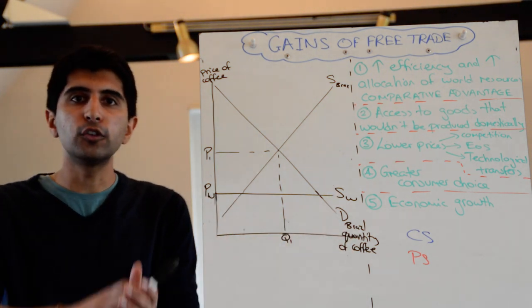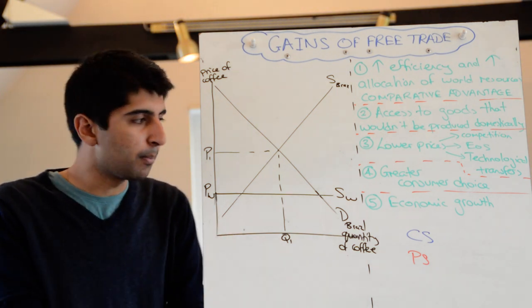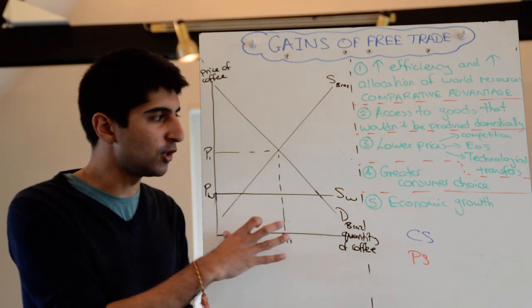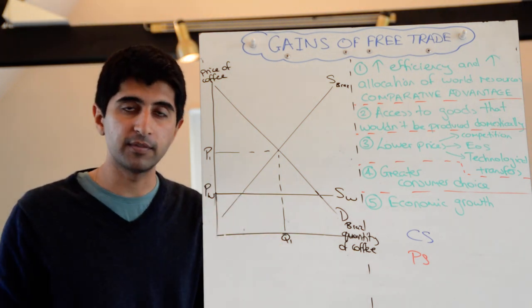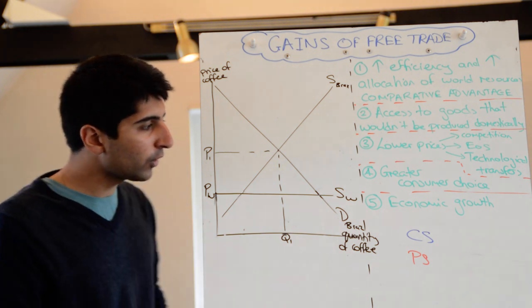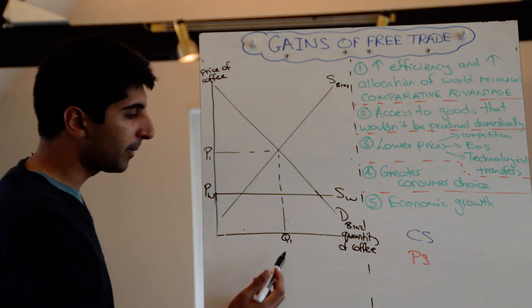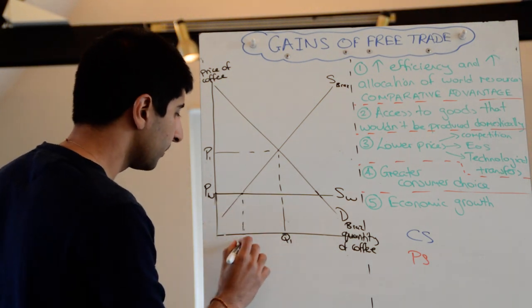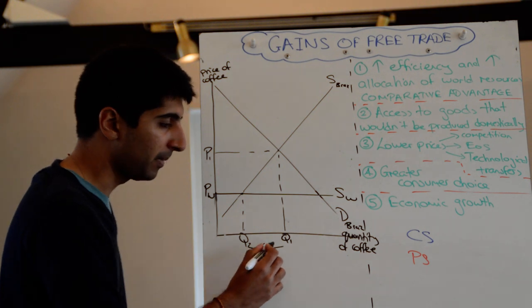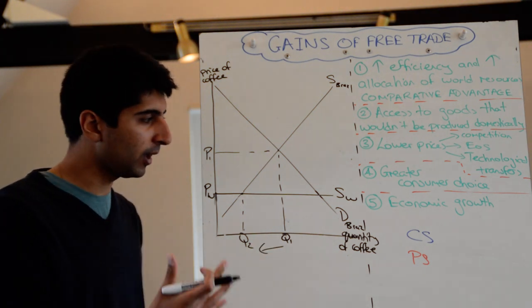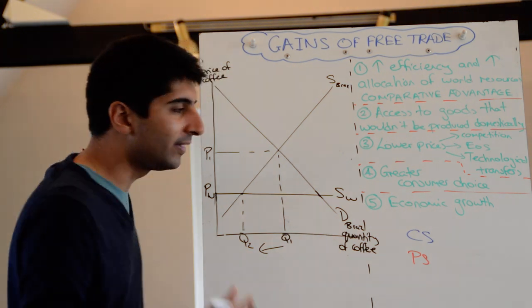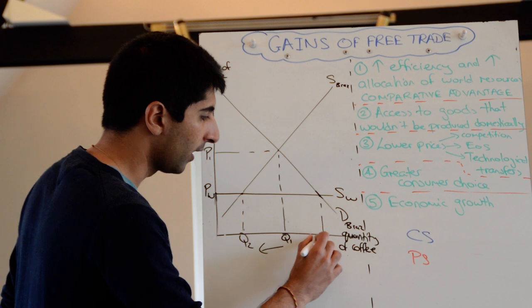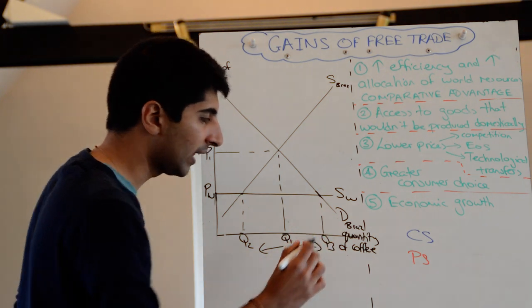That's the world supply. So opening up a market to free trade brings in more supplies, brings in the fact that countries with a comparative advantage can produce. So we're assuming here that Brazil do not have the comparative advantage in producing coffee. So how does that change the market condition? Well, previously, domestic supply was Q1. Now, with a lower price, Brazilian suppliers are willing and able to supply less. It makes sense. With a lower price incentive to supply, it's less. But Brazilian consumers are more willing and able to buy now because the price is lower. So demand in Brazil extends to Q3.